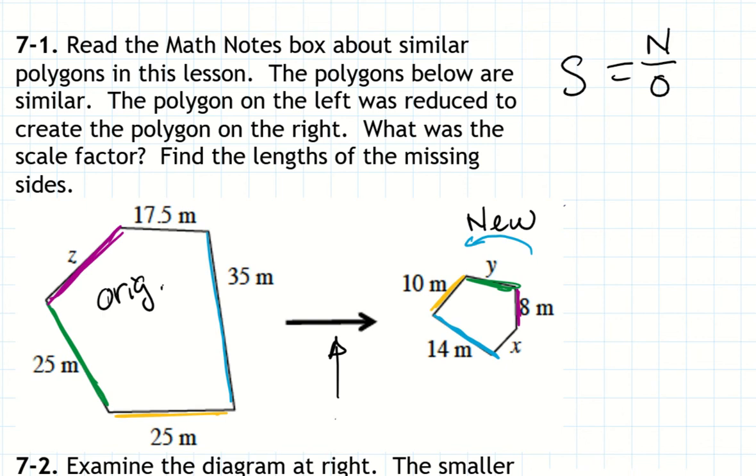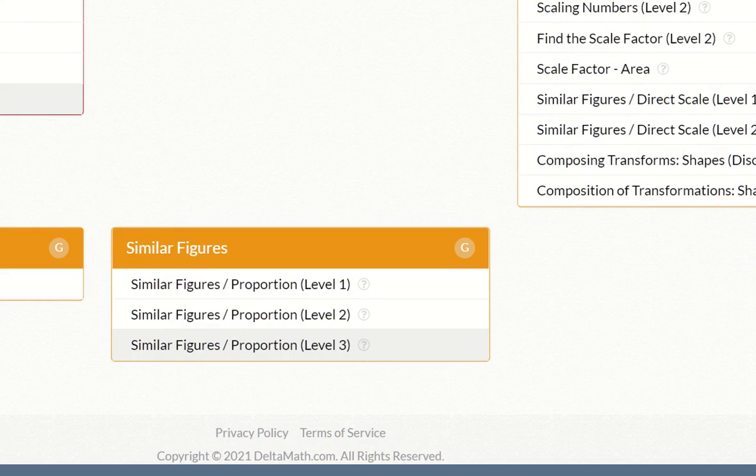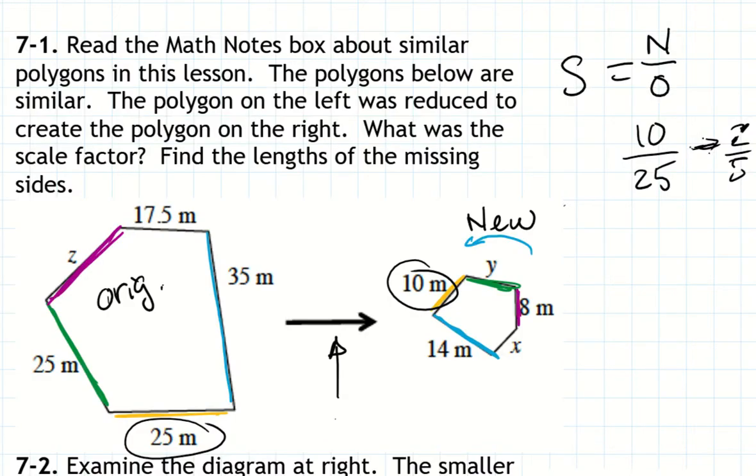And to figure out the scale factor, I'm going to take one of the new dimensions that I know, which is actually this one that's 10, this new dimension, and divide it by the original. So the scale factor is the new, 10, divided by the original, 25. And both of those are divisible by 5. And if I reduce it, 10 divided by 5 is 2. And 25 divided by 5 is 5. So I have 2 fifths. That's 2 fifths is the scale factor.